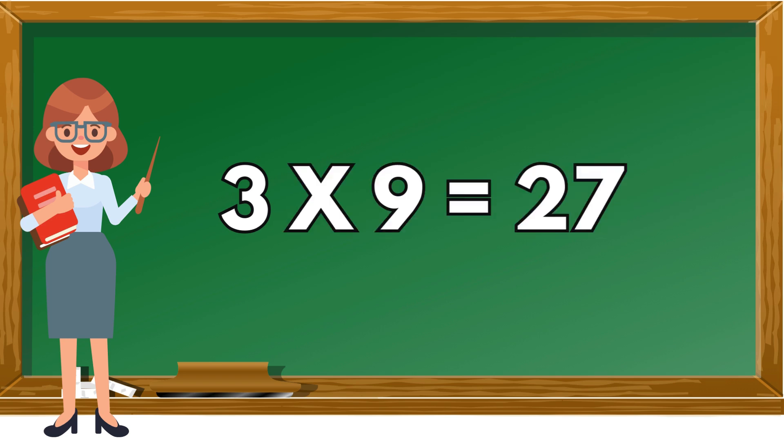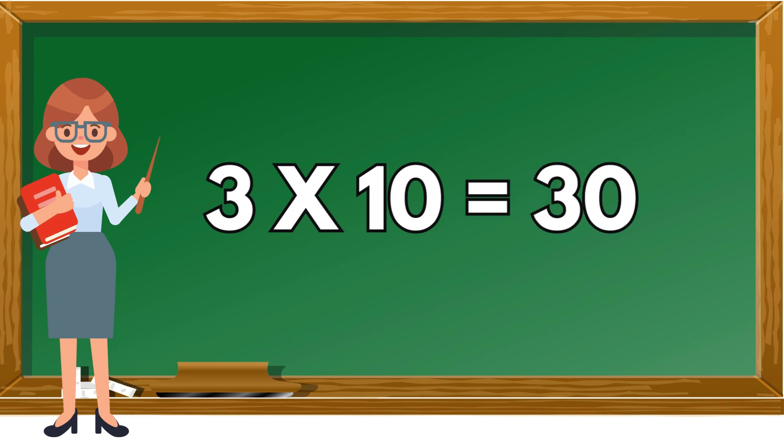Three nines are twenty-seven. Three nines are twenty-seven. Three tens are thirty.